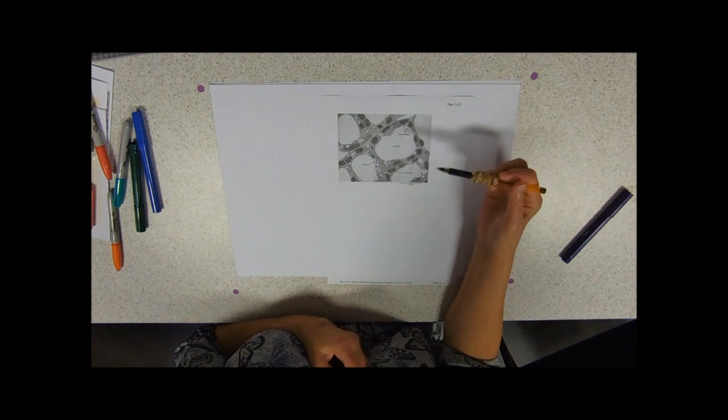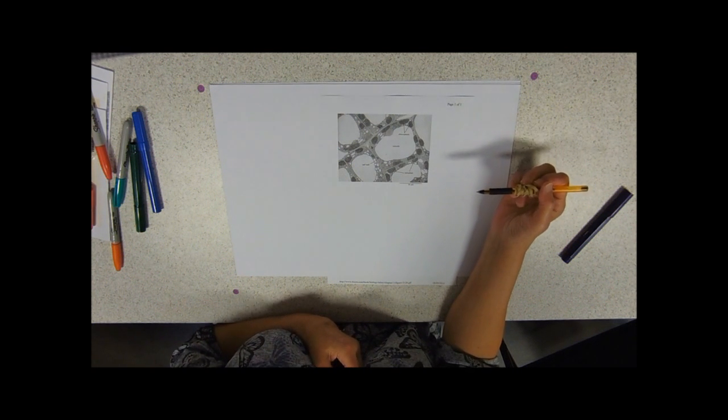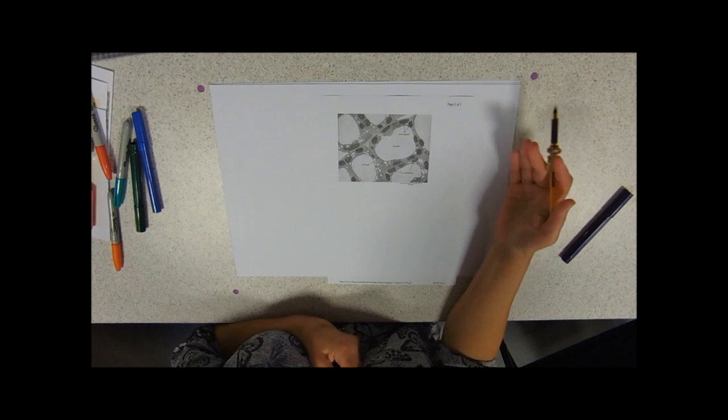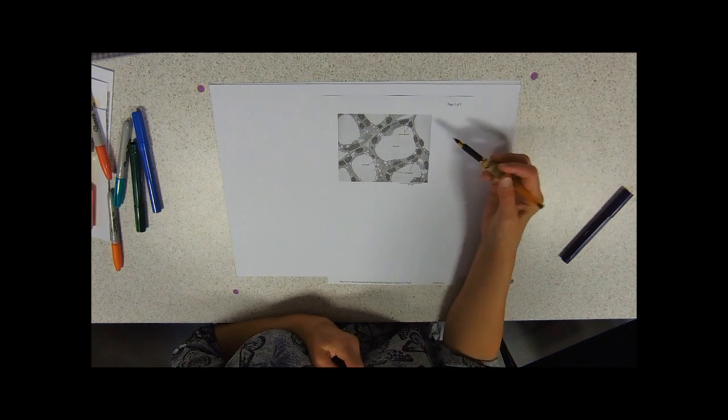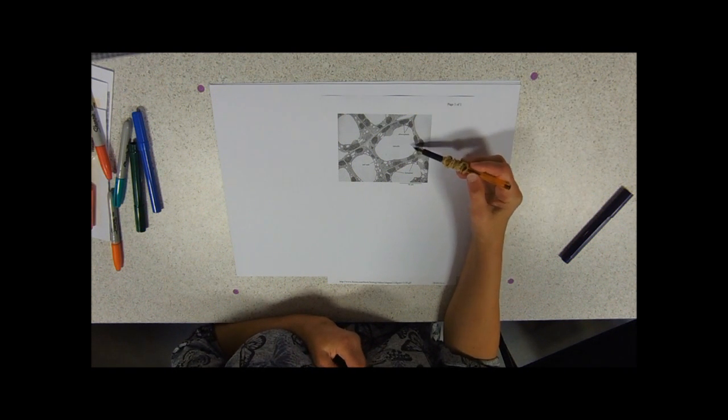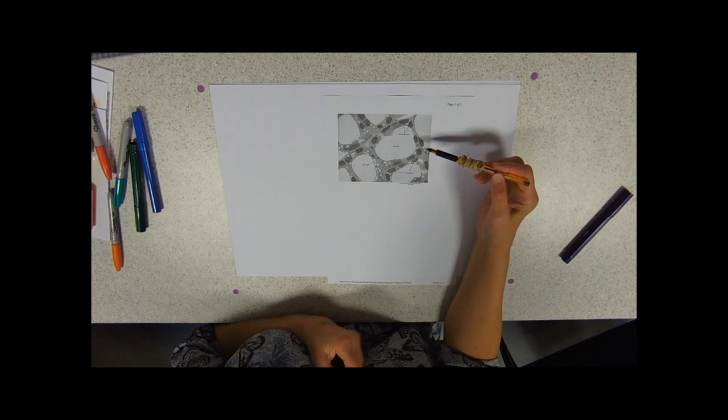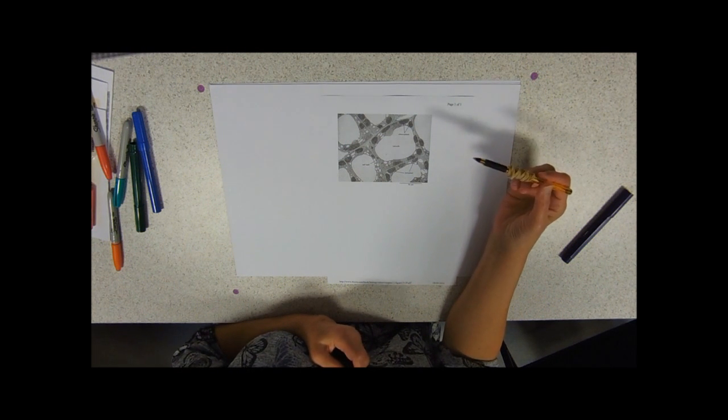So vacuoles involved in keeping the cells turgid and therefore supporting the plants. If a plant loses too much water, it's losing it effectively from that vacuole. So if you put some plant cells, and this will be a bit harsh,